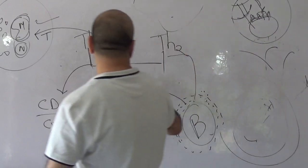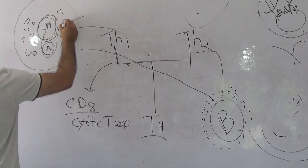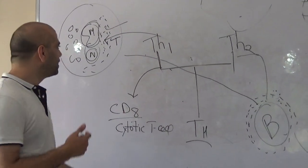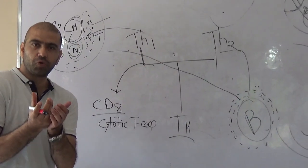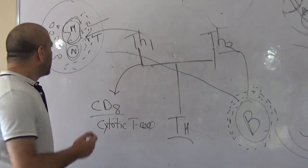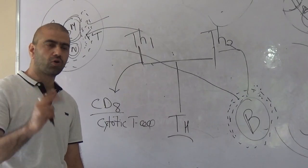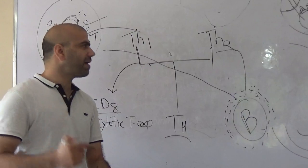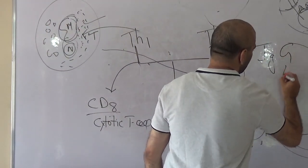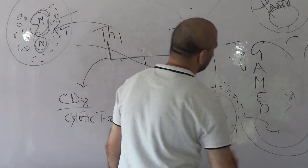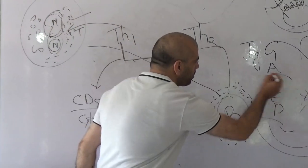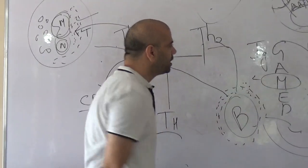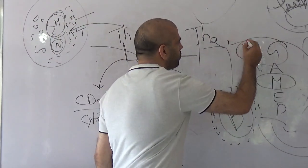The antibodies are secreted into the battlefield. The first thing they do is opsonize the bacteria — tagging them for the macrophages, making the bacteria easier to destroy. This opsonization is brought about by antibodies and the complement system. Antibodies are also called immunoglobulins because they are globular in structure. There are five types of immunoglobulins: IgG, IgA, IgM, IgE, and IgD. Immunoglobulin M is responsible for the primary response, and immunoglobulin G is responsible for the secondary response.